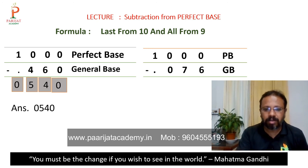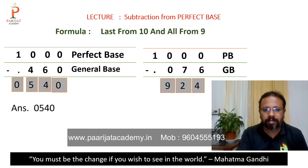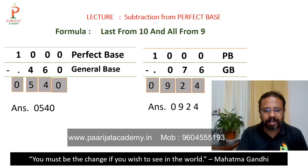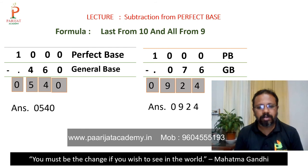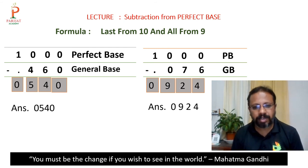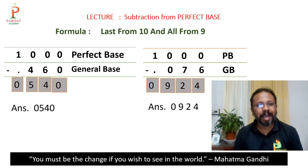Complementary of six is four, complementary of seven is two, complementary of zero by base nine is nine, and one minus one equals zero. So our final answer is nine hundred and twenty-four. Keep practicing such examples on a daily basis and solve the online tasks given in this course. All the best — happy learning!